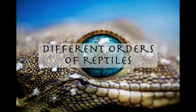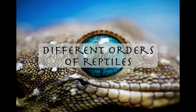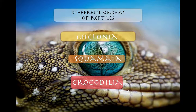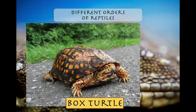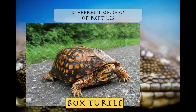Now let's discuss some of the orders — the different orders of reptiles. There are three orders: Chelonia, Squamata, and Crocodilia. Chelonia is probably one of the most distinct of these reptile groups, and that's regarding the turtles. When you see a turtle, you know you're seeing a turtle — there's not a lot of confusion there.